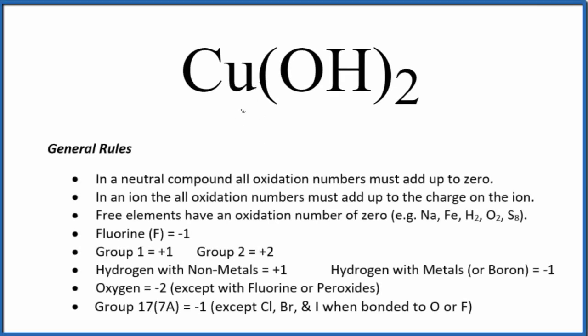Let's take a look at the oxidation numbers for Cu(OH)₂. This is copper 2 hydroxide. First off, copper 2 hydroxide is a neutral compound. There's no negative or positive after it. So when we have a neutral compound, all the oxidation numbers add up to zero. That's important.